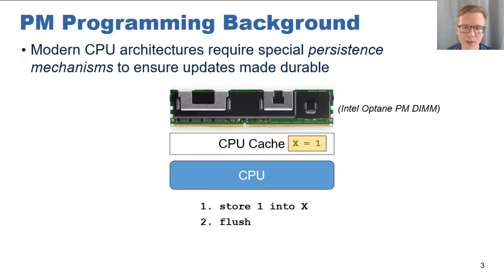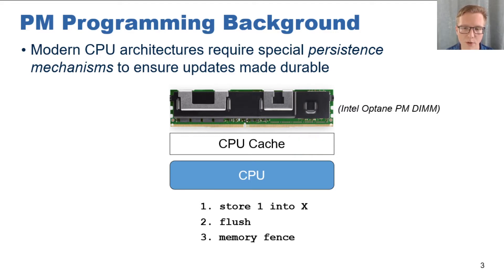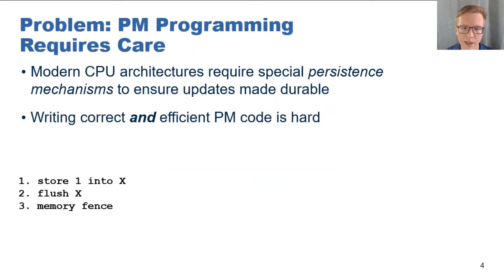However, this flush instruction can be delayed by the CPU, as it is weakly ordered with respect to other instructions. Therefore, we also need to issue a memory fence, which will force the flush instruction to finish, writing the update all the way back to persistent memory. So far, writing updates to persistent memory hasn't seemed that difficult — add a flush and a fence to a store? Seems like a piece of cake.